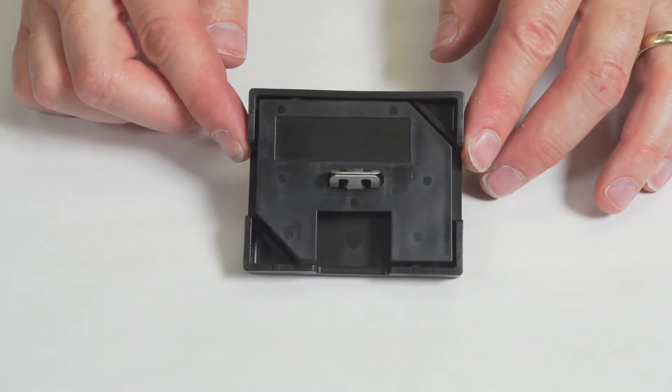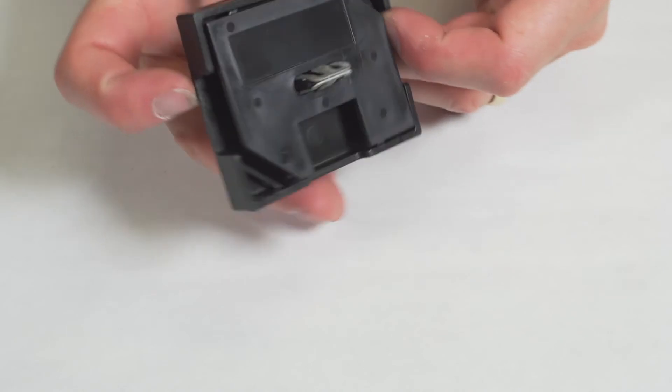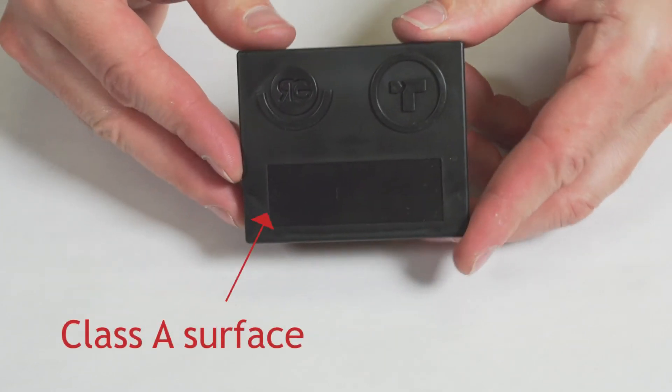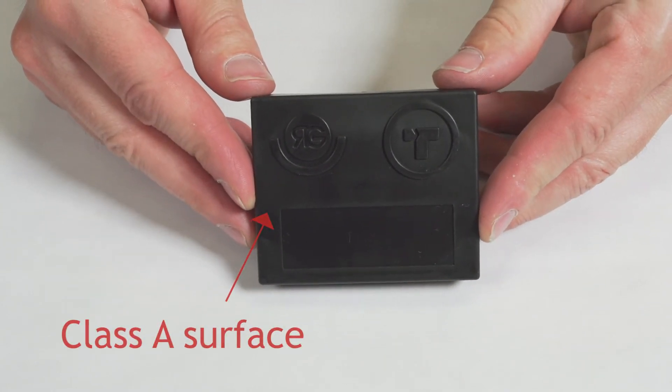The fastener is hidden, providing a cleaner look. The joint is serviceable, but repeated cycles could lead to degradation to the mating panel.